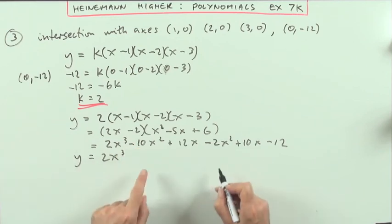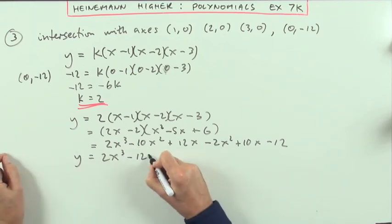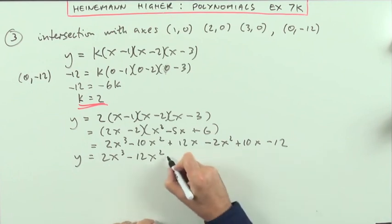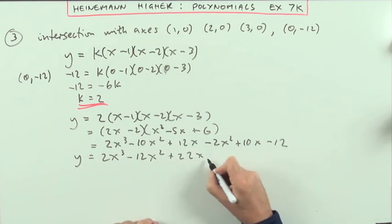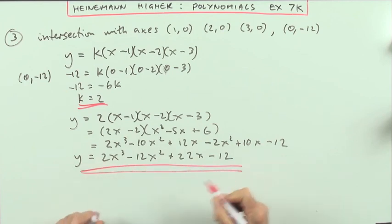And then finally adding it all together, I've only got the one that says x cubed. I've got minus 12x squared plus 22x, and just the one, minus 12. That would have been the equation of the curve.